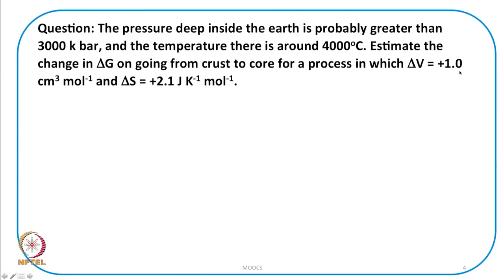For this process, ΔV = +1 cm³/mol and ΔS = +2.1 J/(K·mol). The pressures given are for deep inside the earth (the core) and the temperature there is about 4000°C. The pressure and temperature at the crust can simply be taken as negligible compared to these values. How do we approach solving this question?